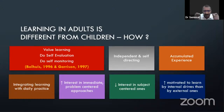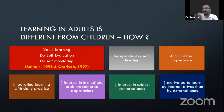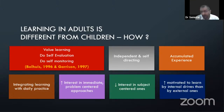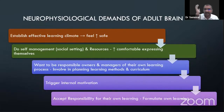Adults want to be responsible owners and managers of their own learning process. They want to be involved in planning learning methods and curriculum. They trigger internal motivation — for example, if I feel I might be developing diabetes, I now have a deep interest in studying about it because I am directly involved. That internal drive is what shapes adult learning.